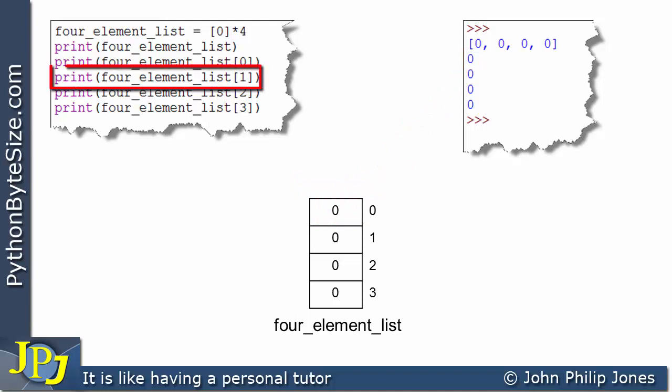Now this line of code is responsible for outputting this element to the console. And of course, this element is at position index one, which means that we go to here in the list and this zero is output to this position. These two lines of code are responsible for sending these two zeros to the console position here.